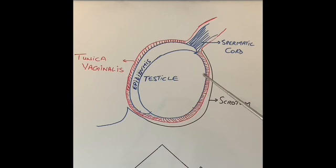When this connection closes, the fluid that is around the testicle gets absorbed. However, sometimes despite this being closed off, the fluid continues to collect around the testicle in the tunica vaginalis. And I will explain in a minute why that happens.